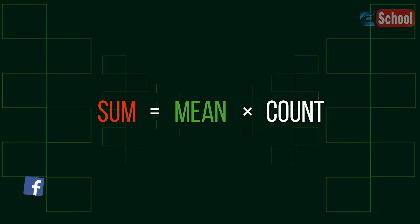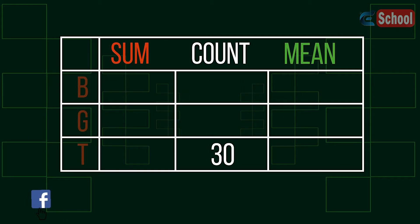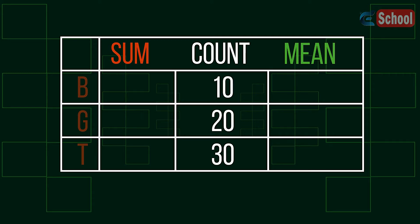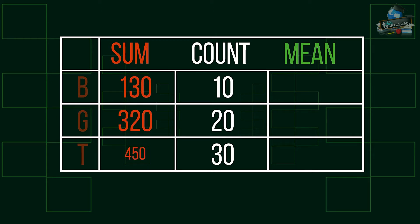Consider this scenario. 30 students sit a maths test — 10 boys, 20 girls. The girls' marks total 320 and the boys' marks total 130. Calculate the mean for boys, girls, and the class. Pause if you want to give it a go.